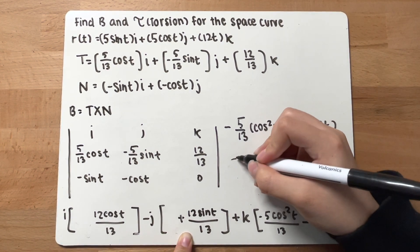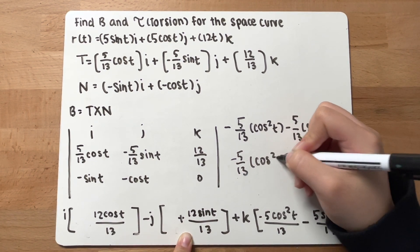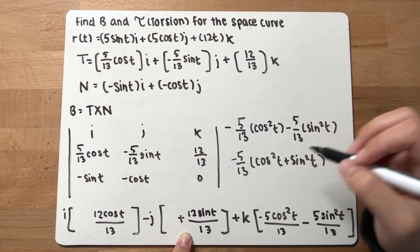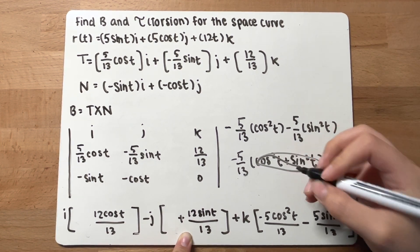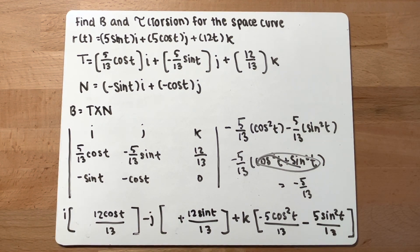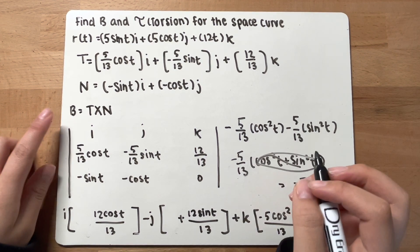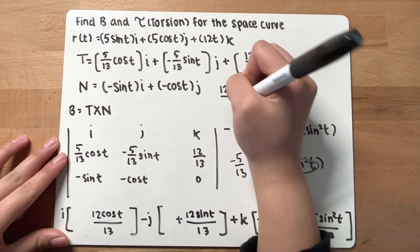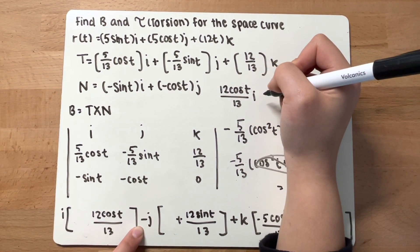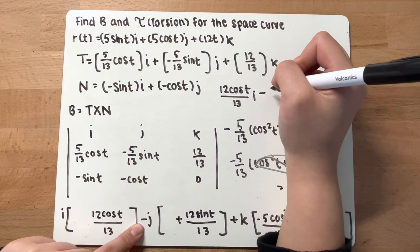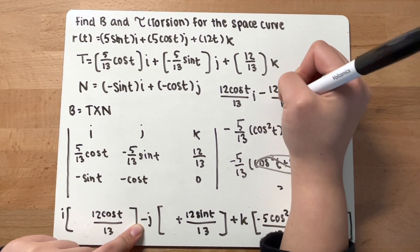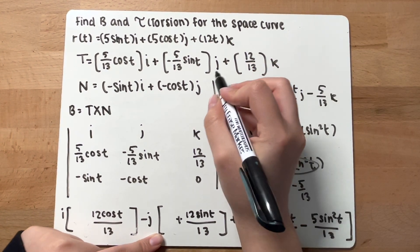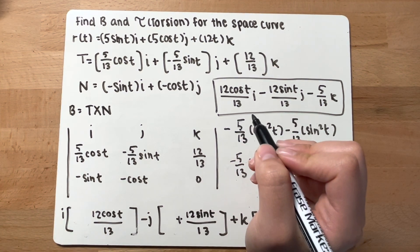If you factor out negative 5 over 13, you get cosine squared t plus sine squared t. Our trigonometric identity says cosine squared t plus sine squared t equals 1, so this simplifies to negative 5 over 13. Therefore, rewriting the binormal vector: 12 cosine t over 13 i, minus 12 sine t over 13 j, minus 5 over 13 k. This is our binormal vector.